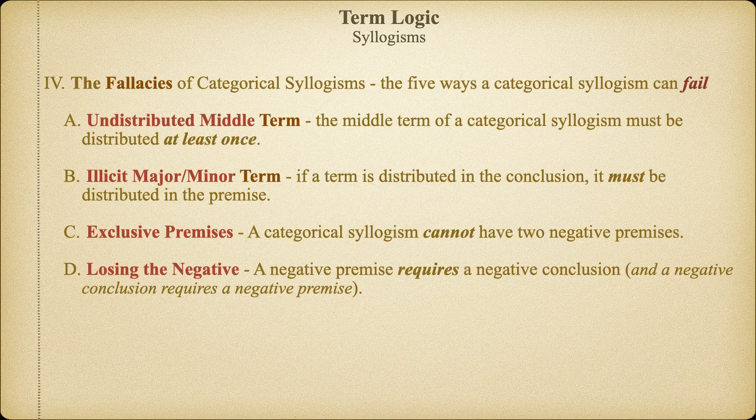The fourth rule is that a negative premise always requires a negative conclusion. Whether it's the major or minor premise that's negative, if we have at least one negative premise, then the conclusion must also be negative. Don't lose the negation — that's the key to this rule.